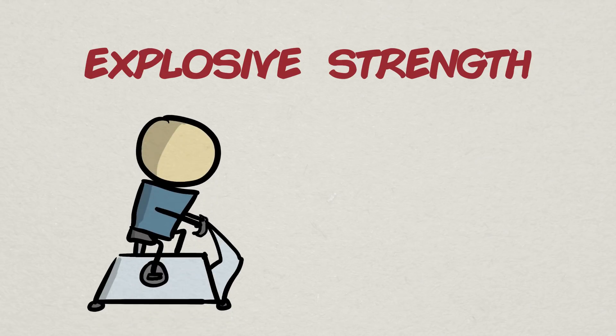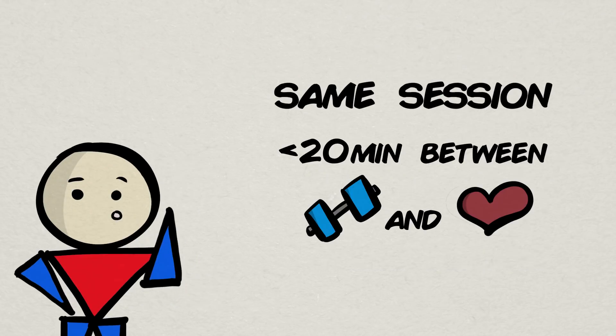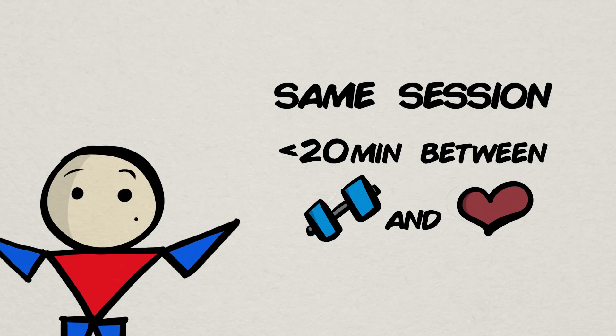Rather, the most we see concurrent training impacting explosive strength is when the aerobic exercise performed was cycling and not running, and only when it was performed in the same session as the strength training. Same session in this case is a break less than 20 minutes between aerobic and strength exercises. There is something quite important to point out here, though.